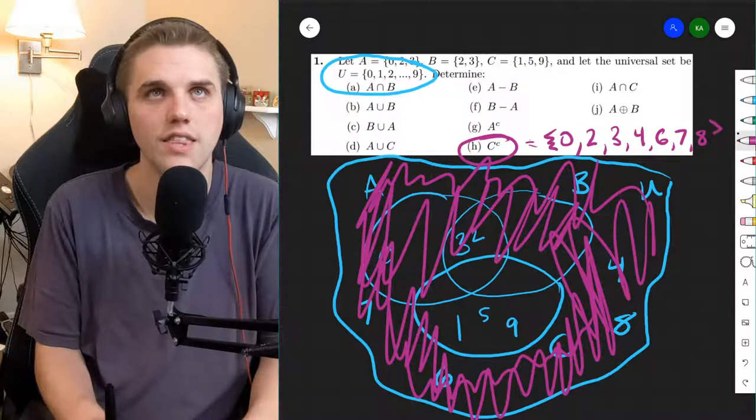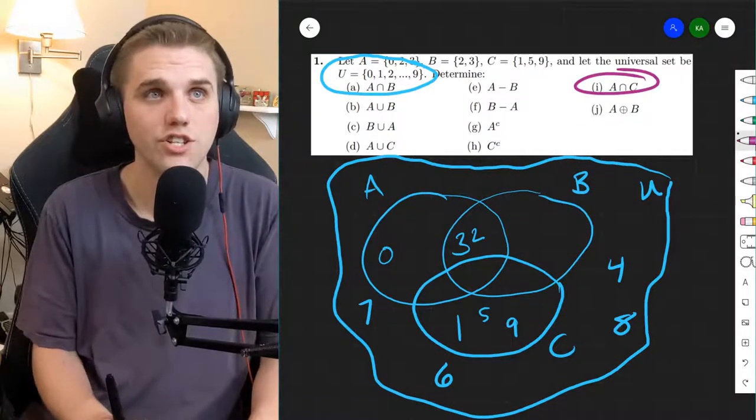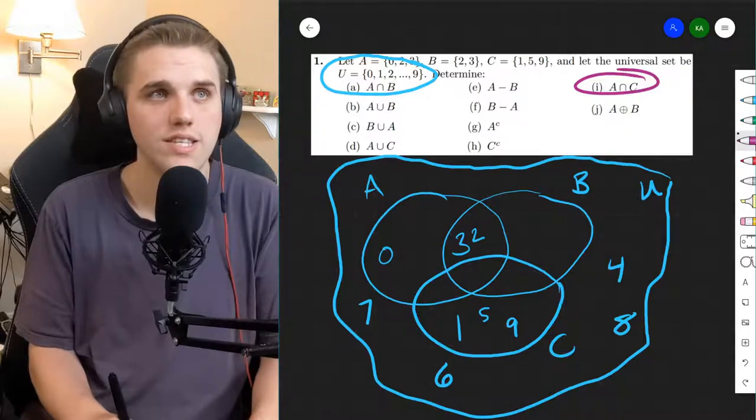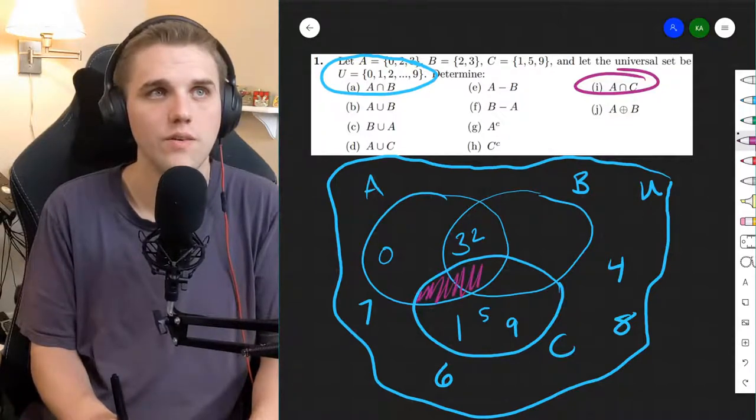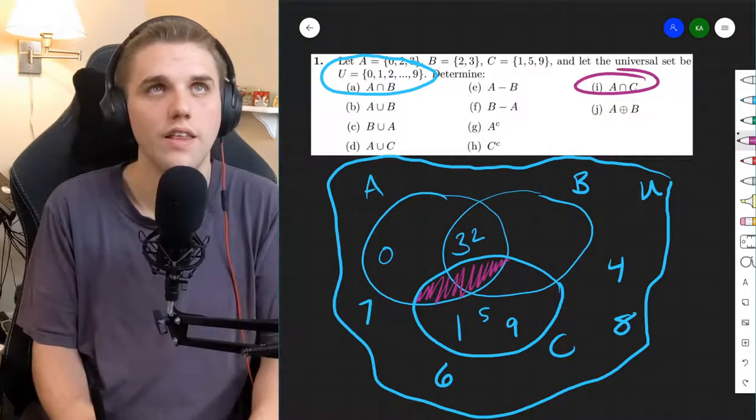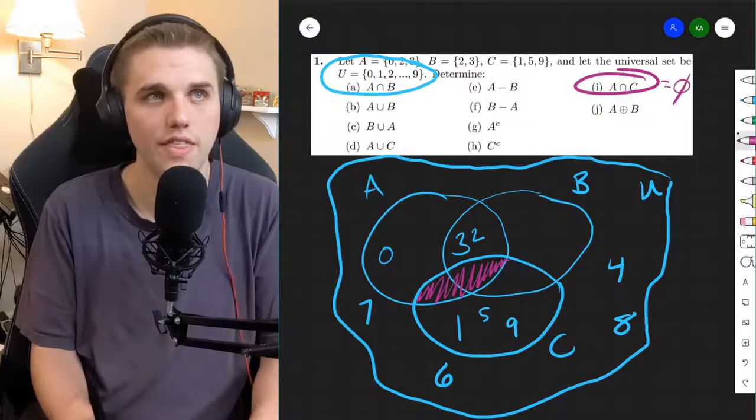I think that is. Let's do A intersection C. So this is everywhere where A and C intersect, which is right here. And this is the empty set. There's nothing there.